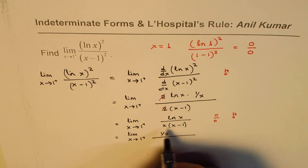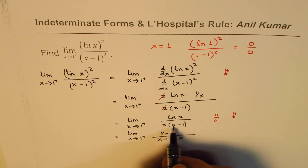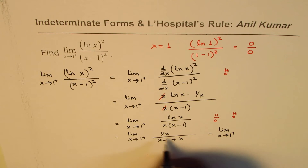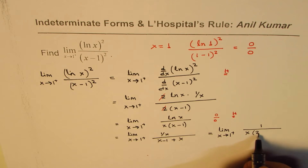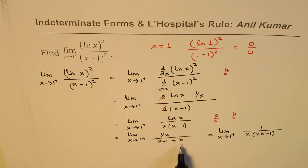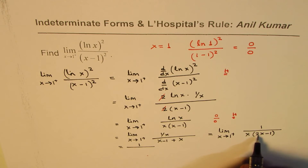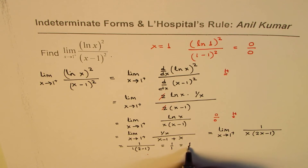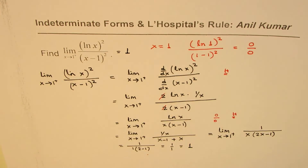For the denominator, using the product rule: derivative of x is 1 times (x−1), plus x times derivative of (x−1) which is 1, giving (x−1) + x = 2x−1. So we get the limit as x approaches 1 from the positive side of (1/x) divided by (2x−1). Substituting x = 1, we get (1/1) divided by (2·1−1) = 1/1 = 1. So the limit is 1.